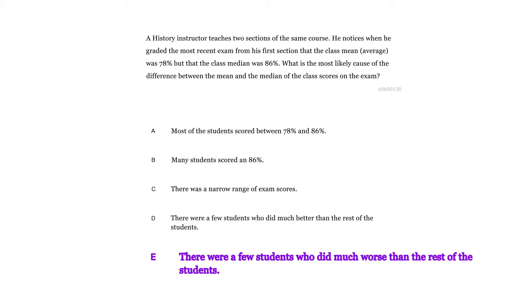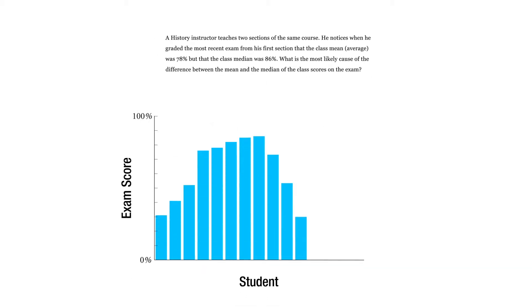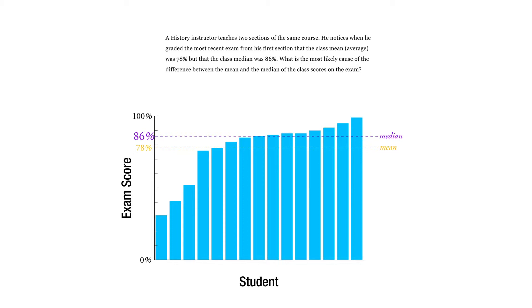A history instructor teaches two sections of the same course, and he notices when he graded the most recent exam from his first section that the class mean, the average, was 78%, but the median of the class was 86%.